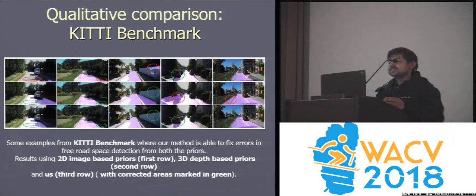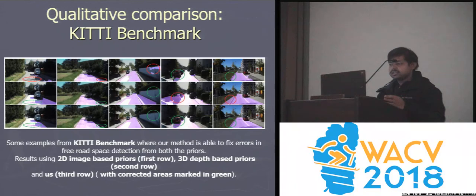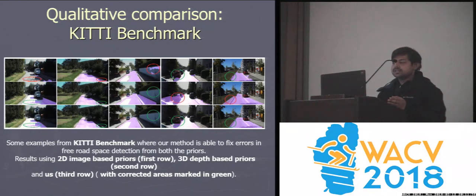These are a few examples taken from the NITTIP benchmark. The first row shows results using only 2D image priors for road detection, and the second row shows examples using only 3D information. Each of these has some problems — either in depth resolution or pavements being detected as road. Each approach complements the other, and when we use both 3D and 2D, as shown in the third row, these problems are resolved.